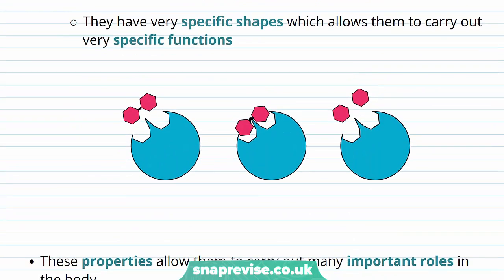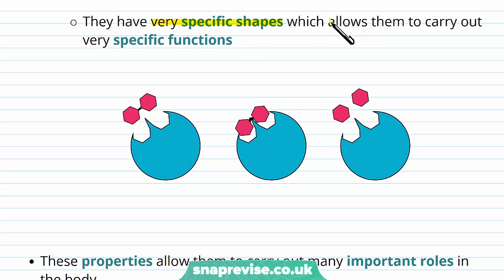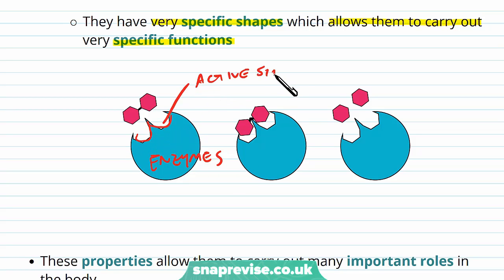Globular proteins also tend to have very specific 3D shapes, and we know that all proteins have their own specific 3D shape for their function. For globular proteins this can be extremely specific, allowing them to carry out very specific functions. For example, enzymes are globular proteins, and they must have an exact active site shape with very specific arrangements of amino acids to interact with the substrate and carry out particular reactions.